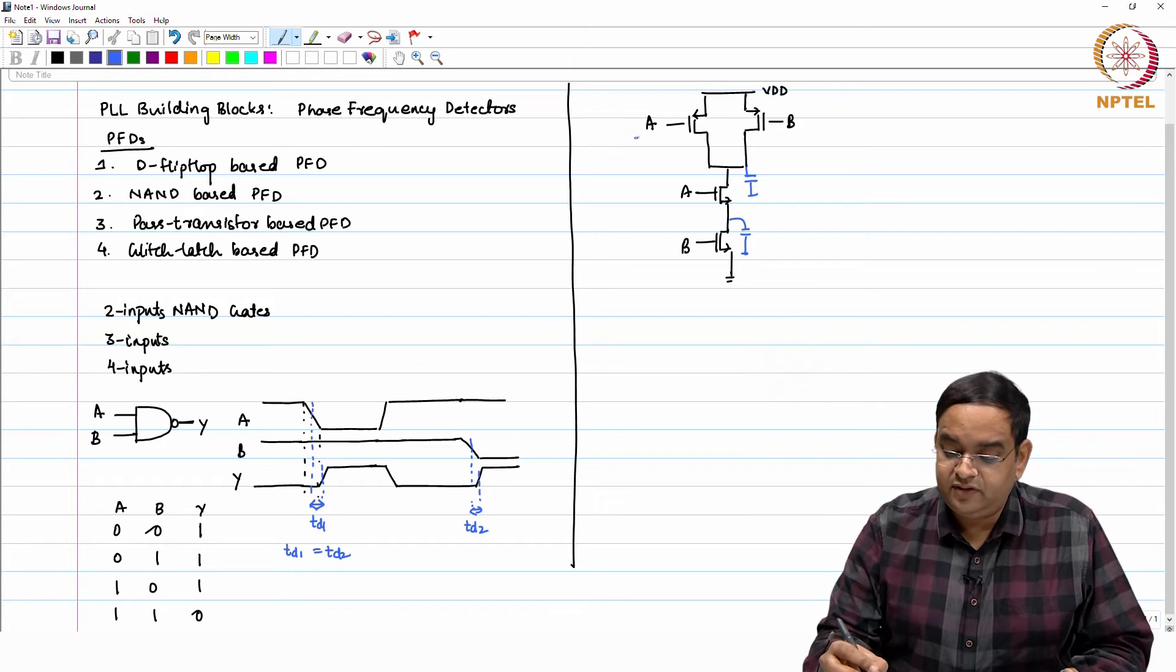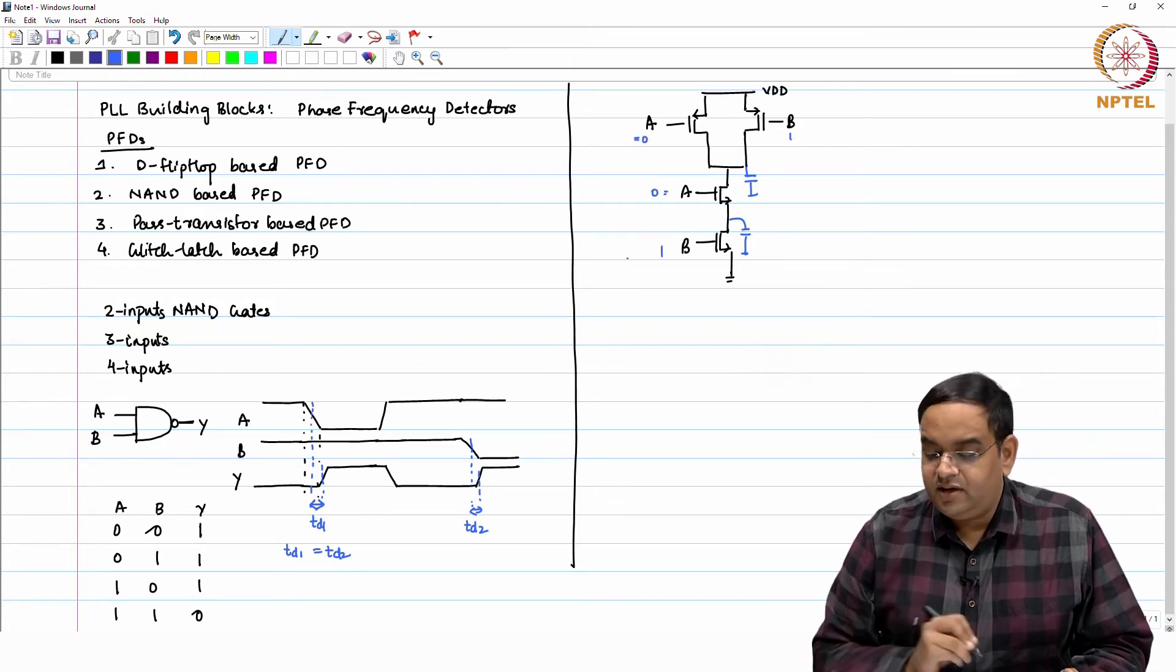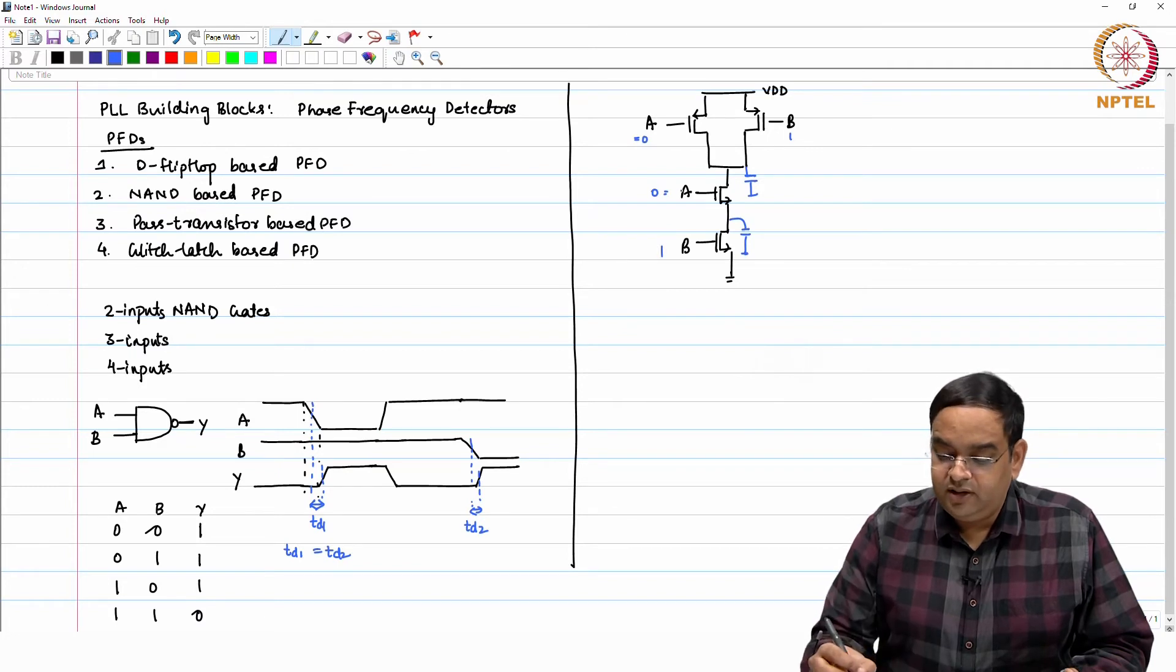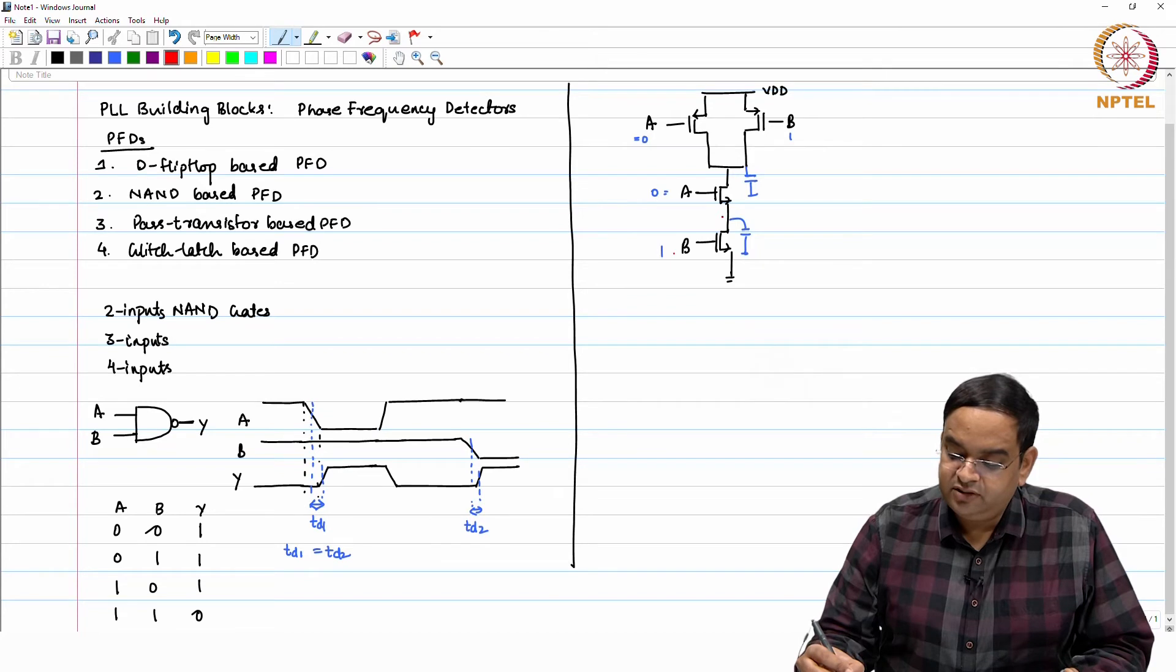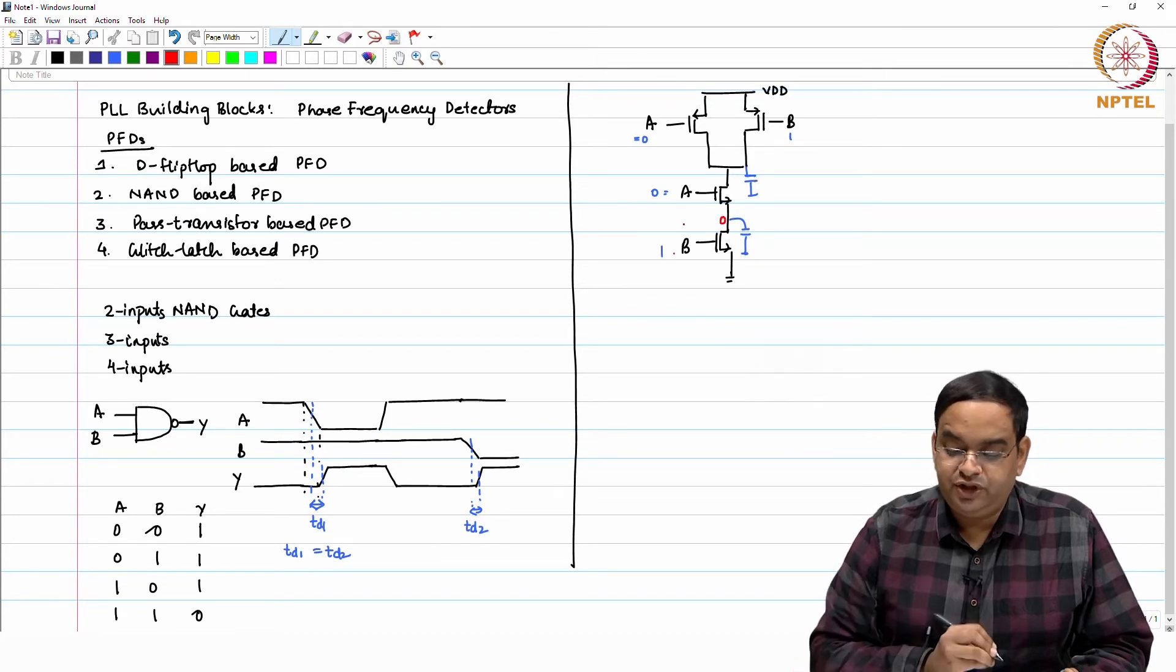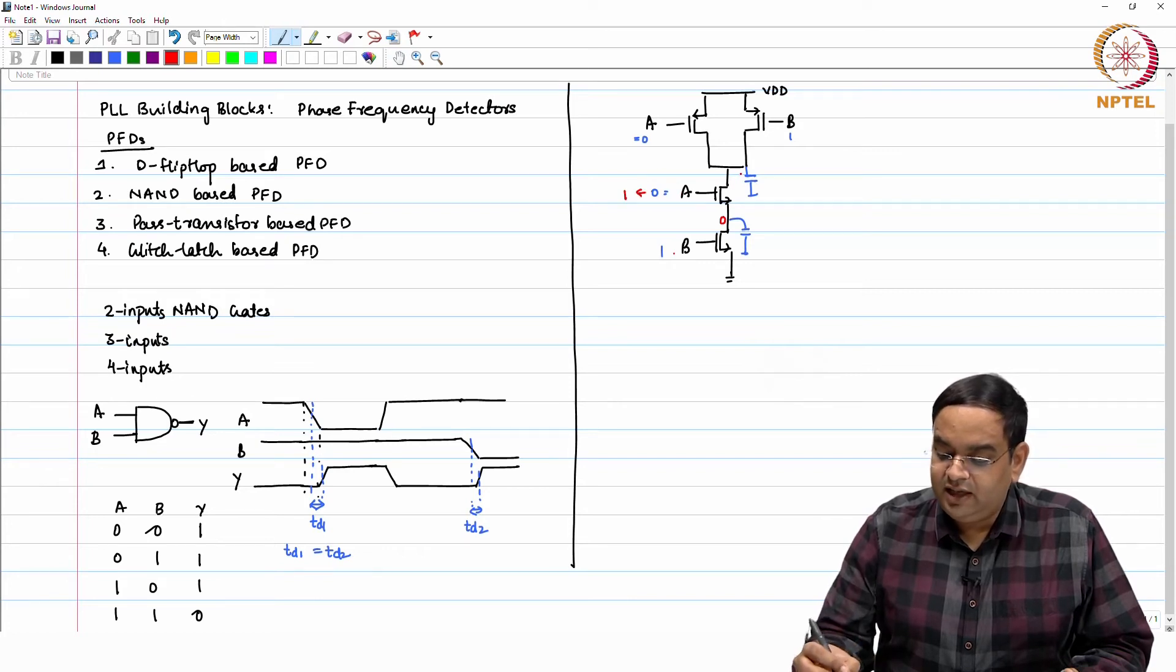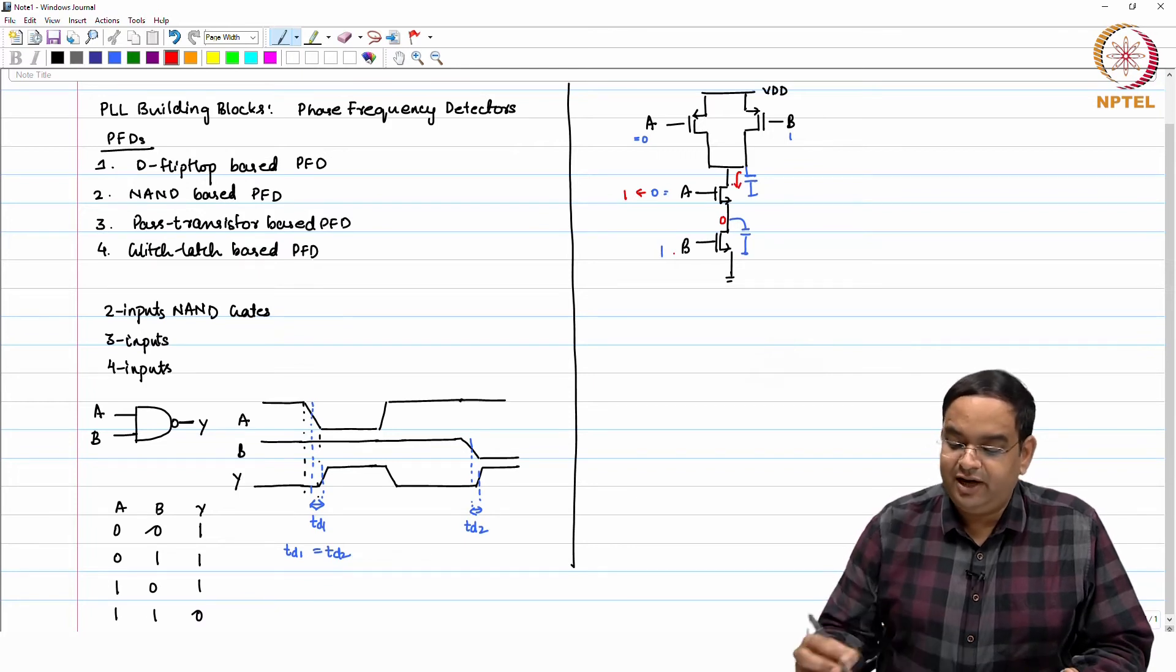When A is 0 and B is 1, and when A goes to 1 at that time, because B was already 1, this would have been discharged to 0. And then when A goes 0 to 1, at that time you are going to discharge only this node, the capacitor which you are having here - C1 and C2 here.